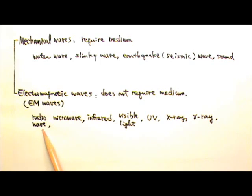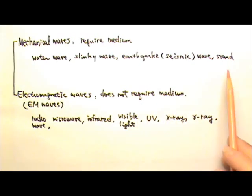EM waves include radio wave, microwave, infrared, visible light, UV, X-ray, and gamma ray. They are oscillating electric and magnetic fields. EM waves from the sun can go through the vast vacuum and reach us.